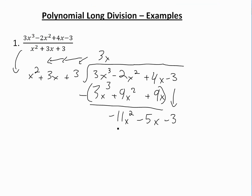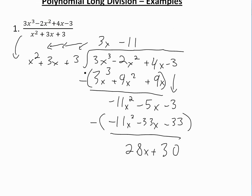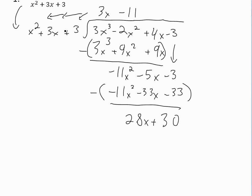We drag down the negative 3. Now we do the exact same method. The highest power is x squared, but it has a coefficient of negative 11. So we multiply by negative 11, giving us negative 11x squared. Then negative 11 times 3x is negative 33x, and negative 11 times 3 is negative 33. We subtract all of this. Negative 5x minus negative 33x is positive 28x, and negative 3 minus negative 33 is 30. So we're left with a remainder of 28x plus 30. Since the degree of the remainder is less than the divisor, we can't divide anymore.